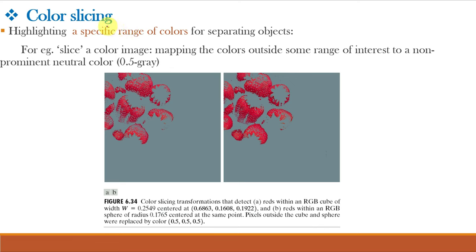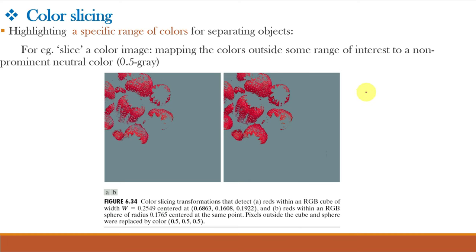The next color transformation is color slicing. The application of color slicing is to highlight certain color ranges, which is useful for finding color objects from the image. For example, for these images, the color slicing transformation detects red color. Similarly, there are other color transformations like tone and color correction, color balancing, histogram processing, etc. But it is to note that to histogram equalize the components of a color image individually is unwise, which results in erroneous colors. A more logical approach is to histogram equalize the intensity component of the HSI space.